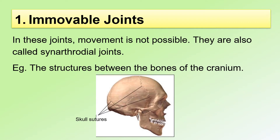First, let's look at the immovable joints. In these joints, movement is not possible. They are also called synarthrodial joints. One good example of this joint is the structures between the bones of the cranium, as seen here.